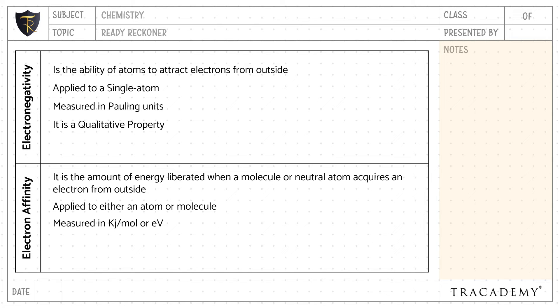Electronegativity is a qualitative property, whereas electron affinity is a quantitative property. Example of an electronegative element is fluorine, whereas example of an electron affinity atom is chlorine.